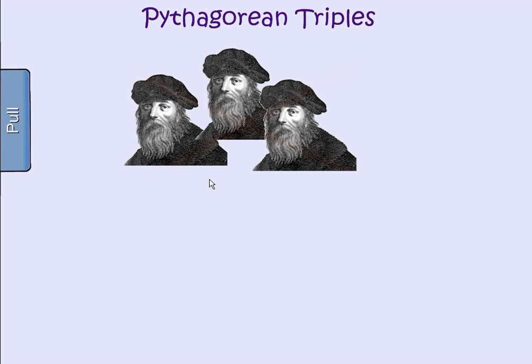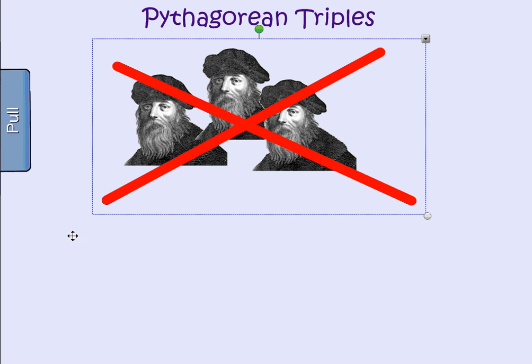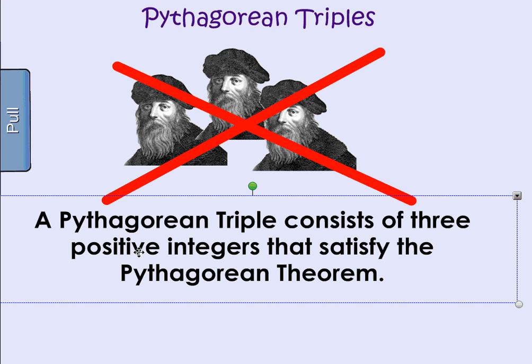There's something called Pythagorean Triples. And Pythagorean Triples is not just three sets of Pythagoras. Instead, what it is, is three positive integers that satisfy the Pythagorean Theorem.